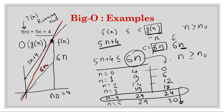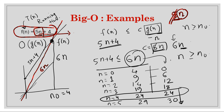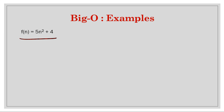Whenever you see a function, you just ignore the smaller lower-order terms and take the largest term — largest meaning the largest power of n. Here the largest power is the term 5n, so ignore the constant too and just take this, giving O(n). For another example, the largest power is 5n², so ignoring the constant gives O(n²).